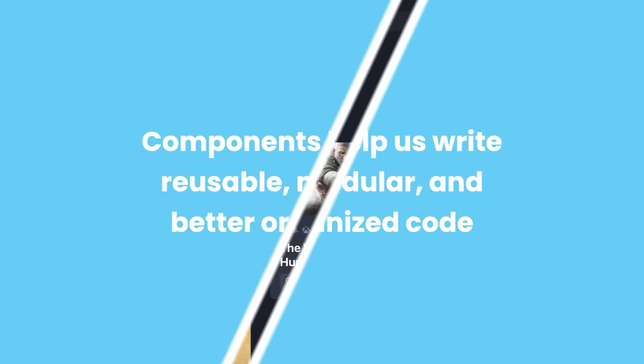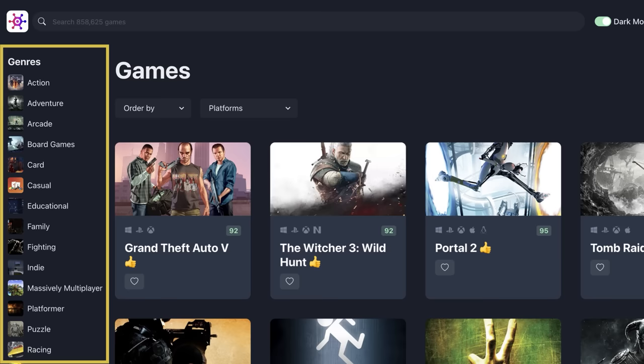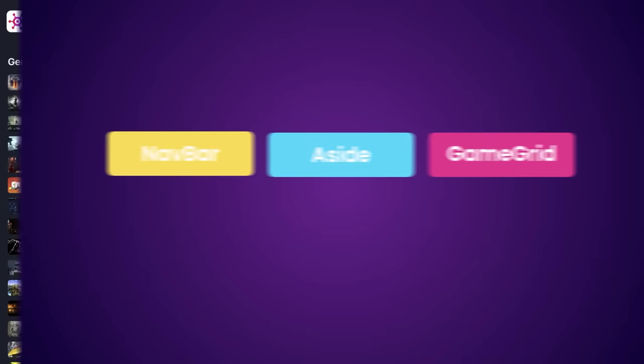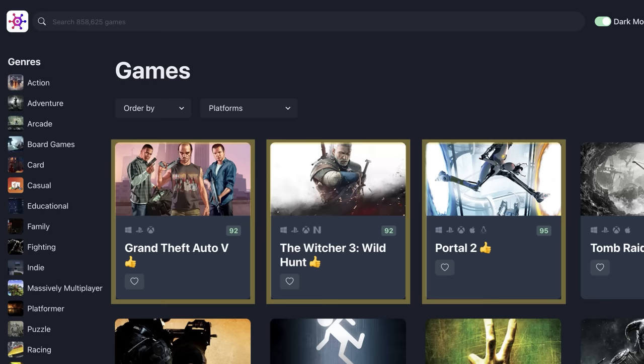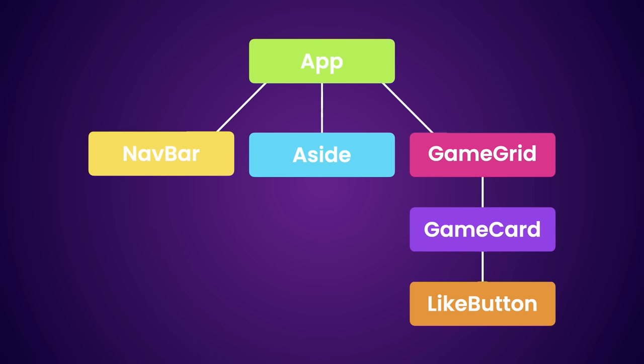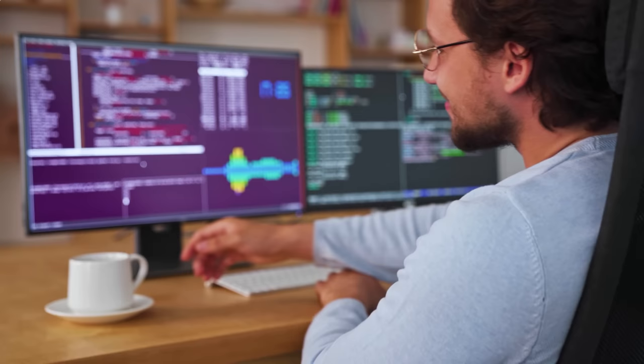Let's look at a real world example. Imagine you want to build a web page with a navigation bar on top, a side panel on the left, and a grid of video games in the main area. We can build each of these sections as separate components. In this grid, each game is displayed in a card, which is an independent component with a like button — that's another component itself. We can build all these components individually and then combine them to build the page. Essentially, a React application is a tree of components, with the app being the root, bringing everything together.